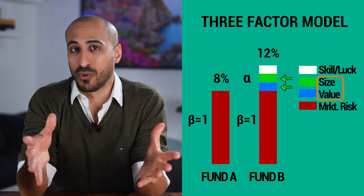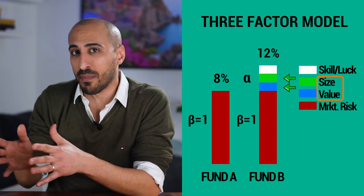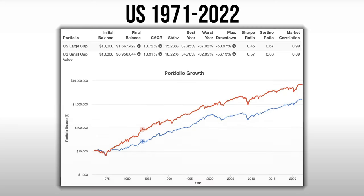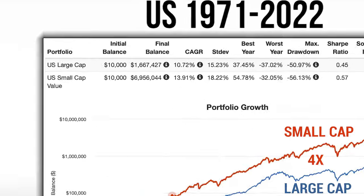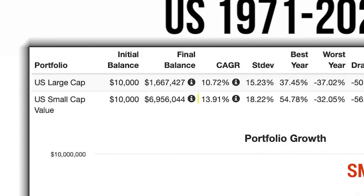This model demonstrated that roughly two-thirds of the alpha generated by fund managers could be explained by them simply having higher exposure to smaller companies and value stocks. In the US since 1971, small-cap value stocks have delivered a return over four times larger than large-cap growth stocks, delivering an average yearly return of 13.91% against 10.72% for large-cap growth.